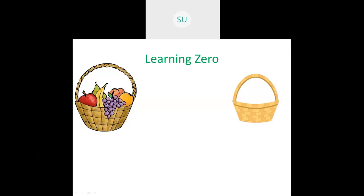What is the meaning of 0? Here I have a basket of fruits. You can see the different types of fruits in this basket. Now what happens if I distribute these fruits among all of you? You will eat all these fruits. Then what remains in the basket? There is nothing remaining — the basket is completely empty. So there are 0 fruits in this basket. There is nothing in the basket, meaning the number of fruits is 0.